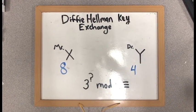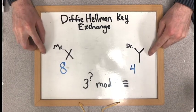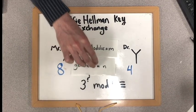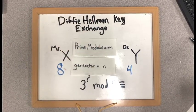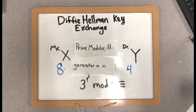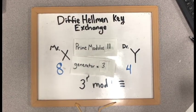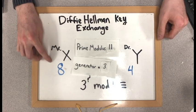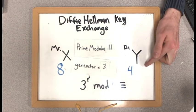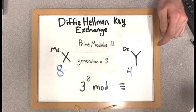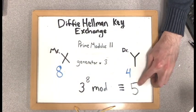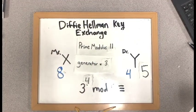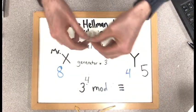So now that we have our one-way equation, let's apply it to the same process we used with the paint mixtures. Mr. X and Dr. Y will publicly agree on a prime modulus M and a generator N that are relatively prime to each other. In this example, we will use 11 and 3. Then X and Y will each choose a positive integer that only they know. Here, X chooses 8 and Y chooses 4. X calculates 3 to the 8th mod 11 and sends that value 5 to Y. Then Y calculates 3 to the 4th mod 11 and sends their value over to X.